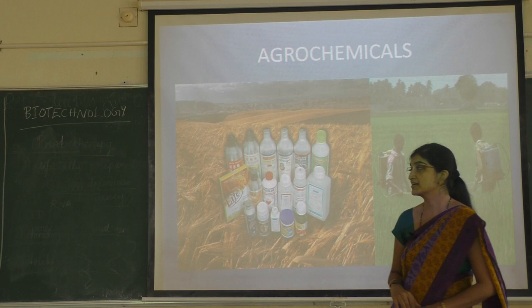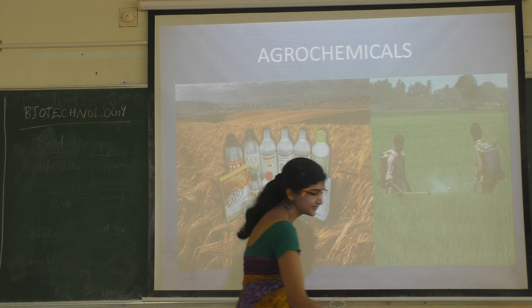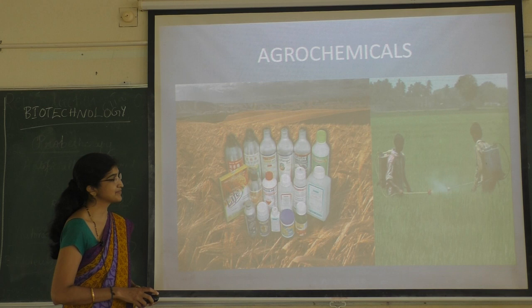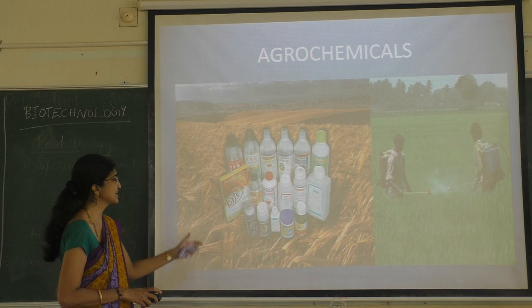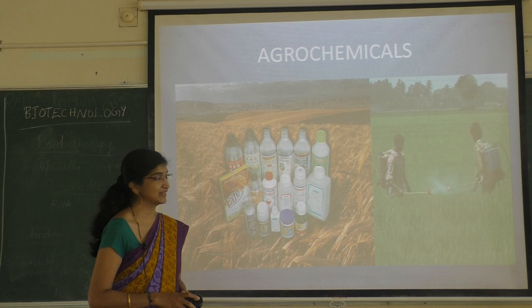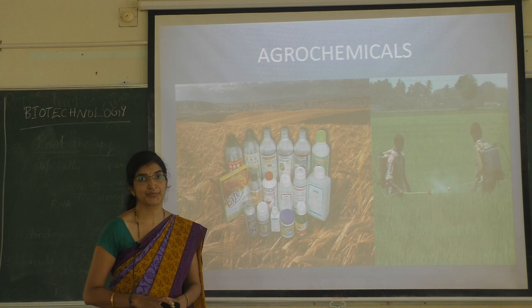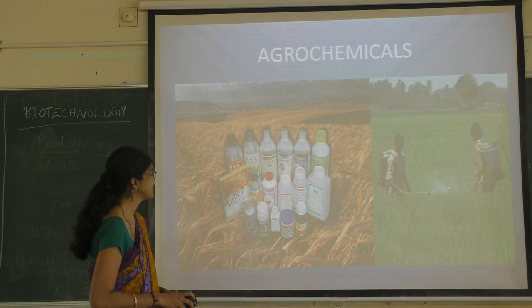In agrochemical-based agriculture, different types of chemicals are used — either pesticides or insecticides, then chemical fertilizers — in order to get rid of microorganisms and pathogens, as well as to raise the fertility of the soil and obtain more production.